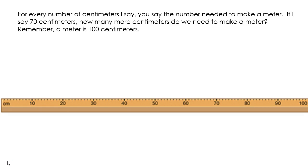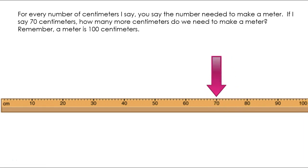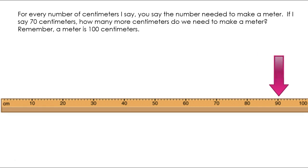For every number of centimeters I say, you are going to say the number needed to make a meter. So if I were to say 70, how many more centimeters do we need to make a meter? Remember, a meter is 100 centimeters long. So how many more centimeters if we start at 70 do we need to make a meter? Let's count by tens. 10, 20, 30. So how many more do we need? Write 30 more centimeters.